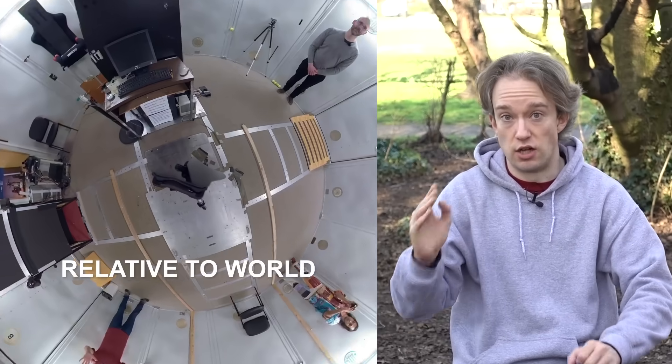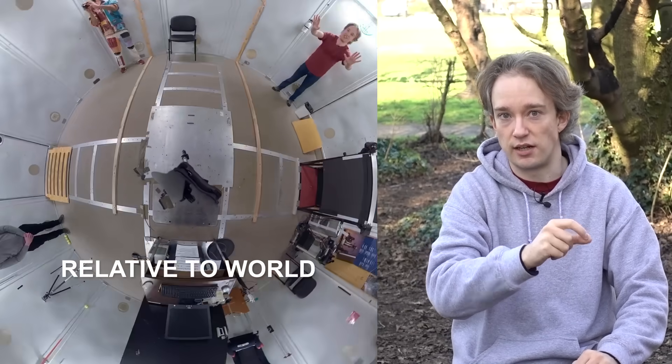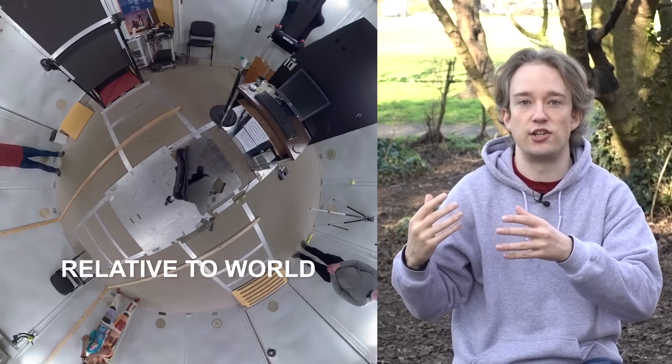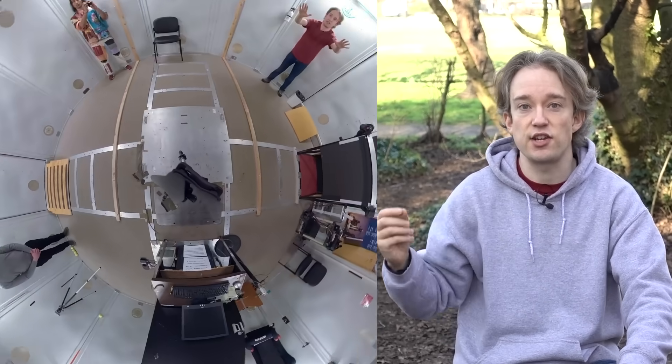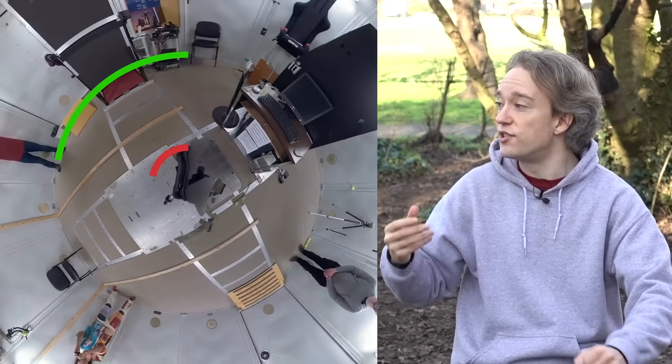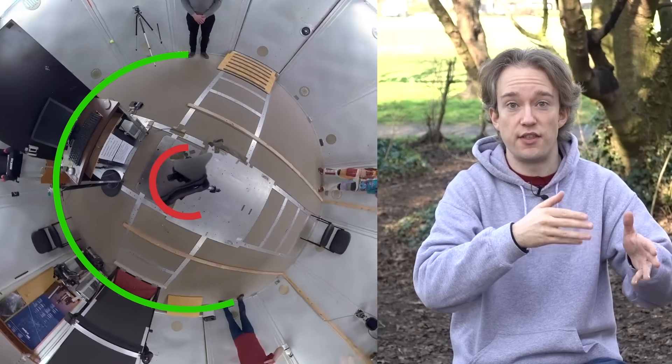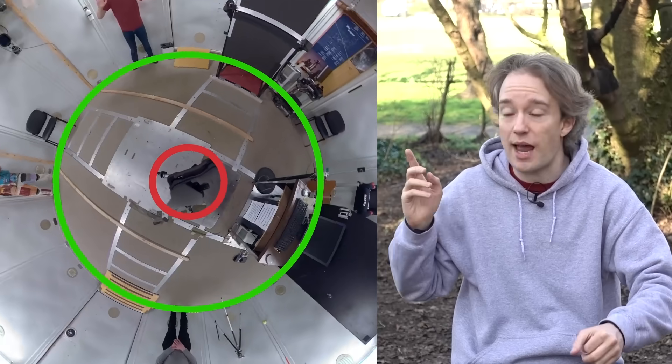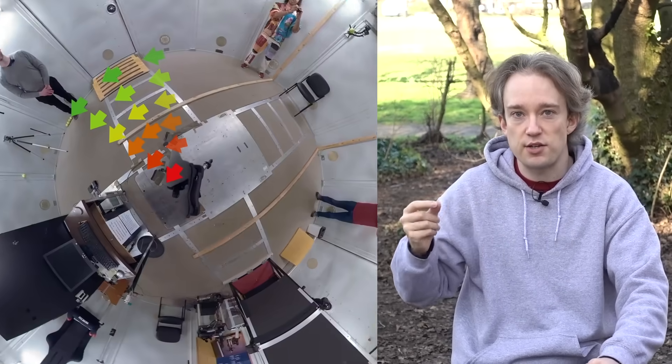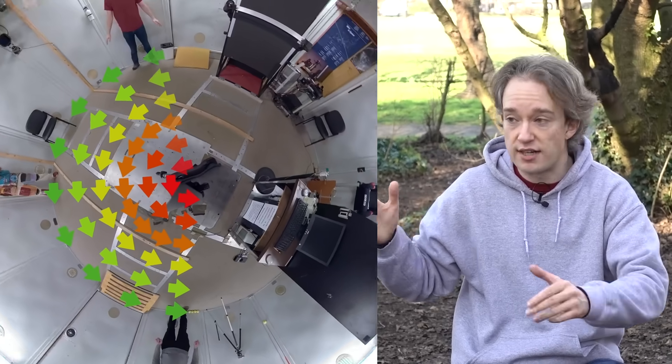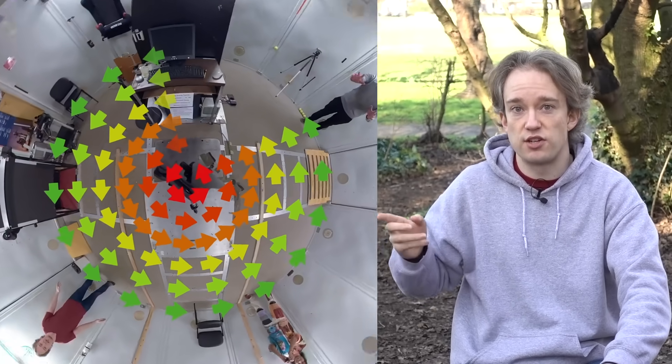The circumference of a circle is longer the further out you go from the middle. But because everything in that circle is rotating at the same speed once around every six seconds, things on the outside have farther to travel. So they're moving at a faster speed than things on the inside. On the outside, we're moving pretty fast, but that camera in the middle is just spinning on the spot. So let's mark the sideways speed that everything is moving at, relative to the rest of the world. Green is fast, red is slow.